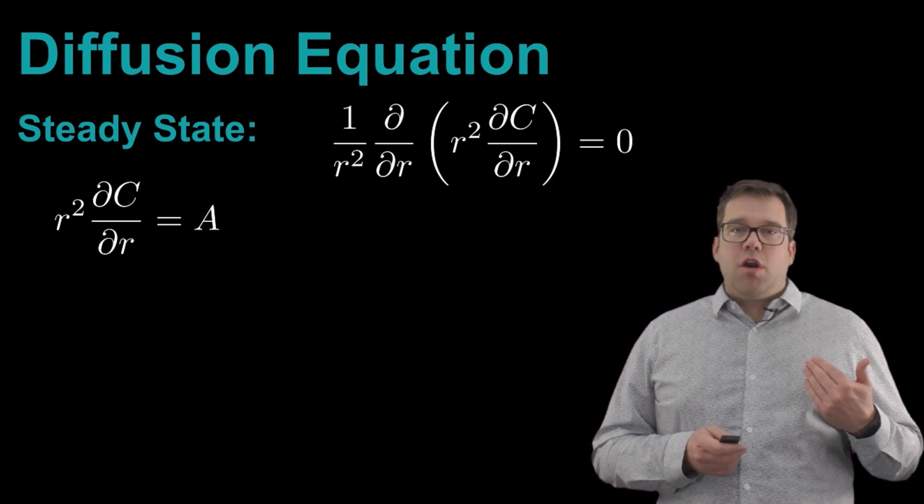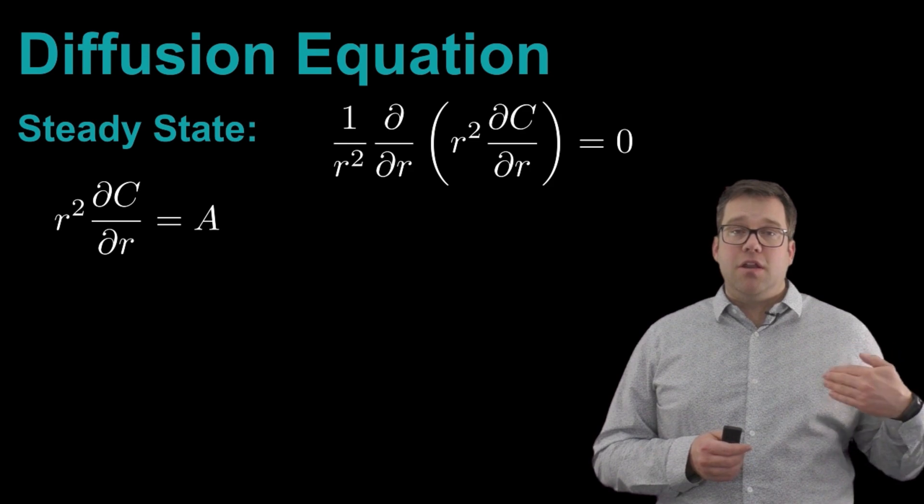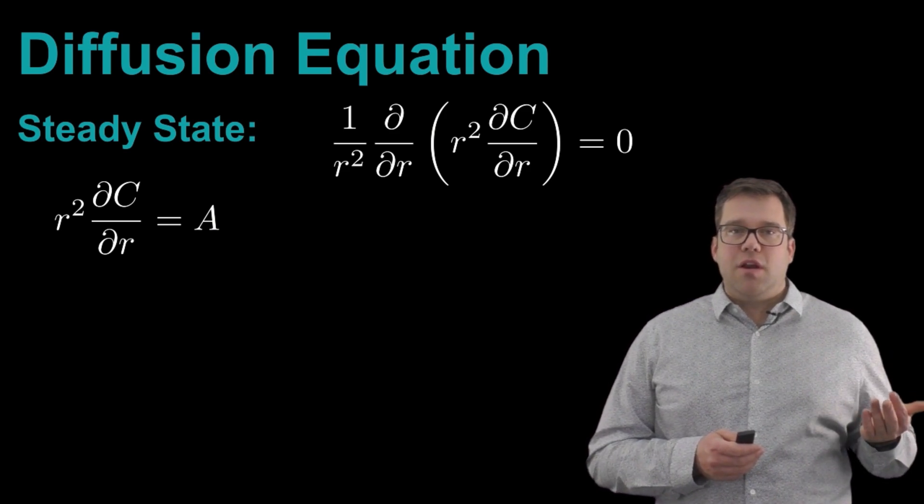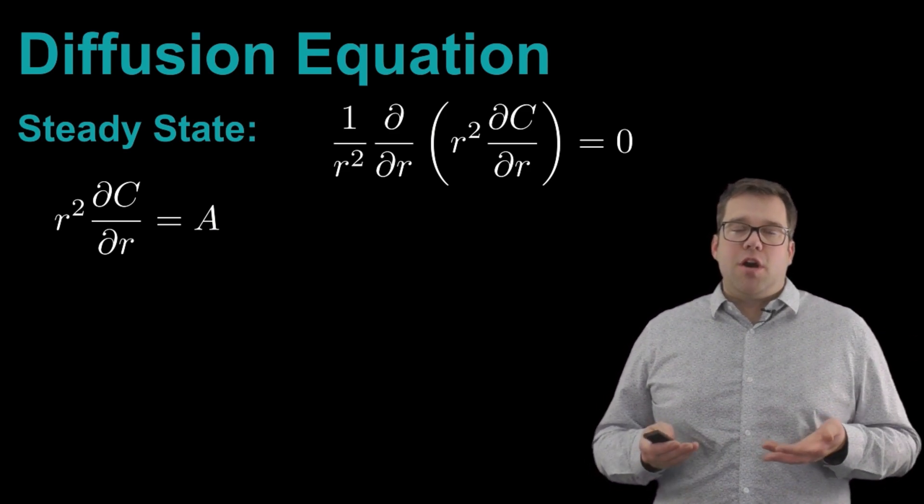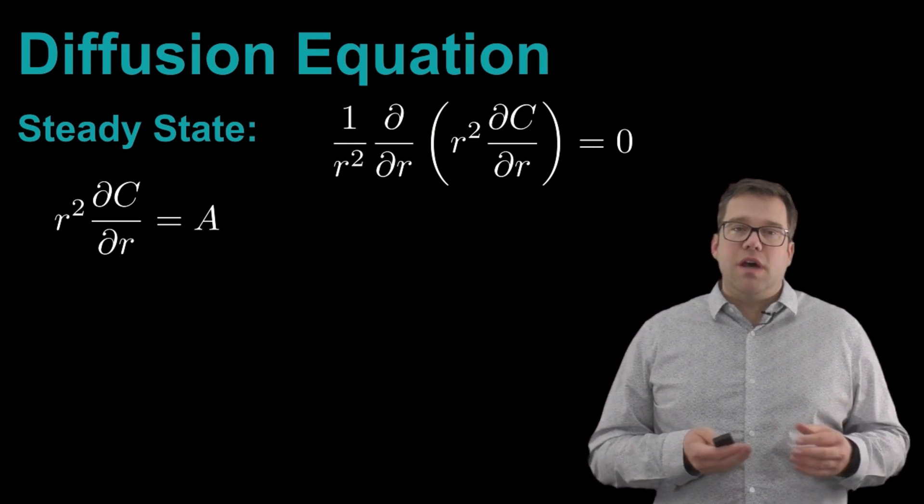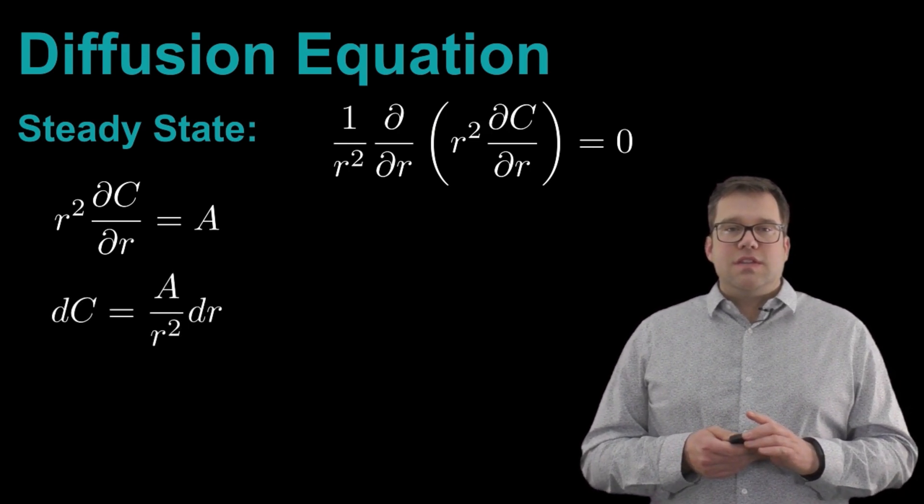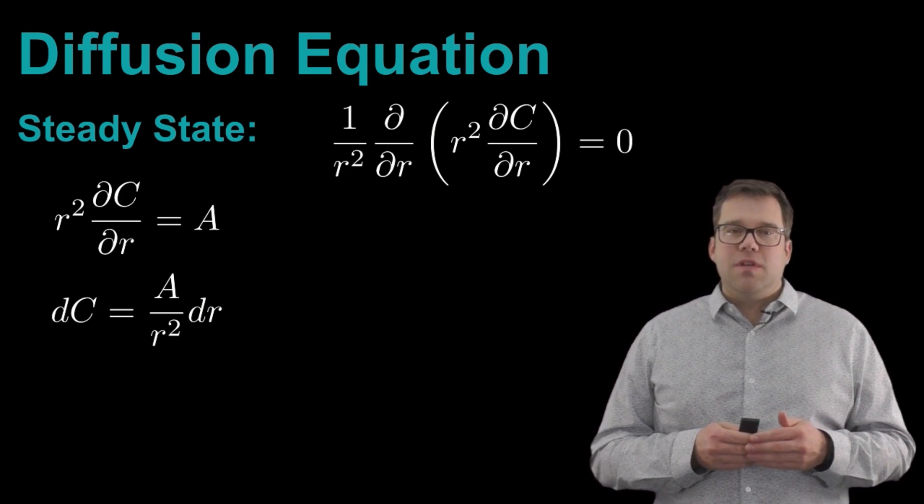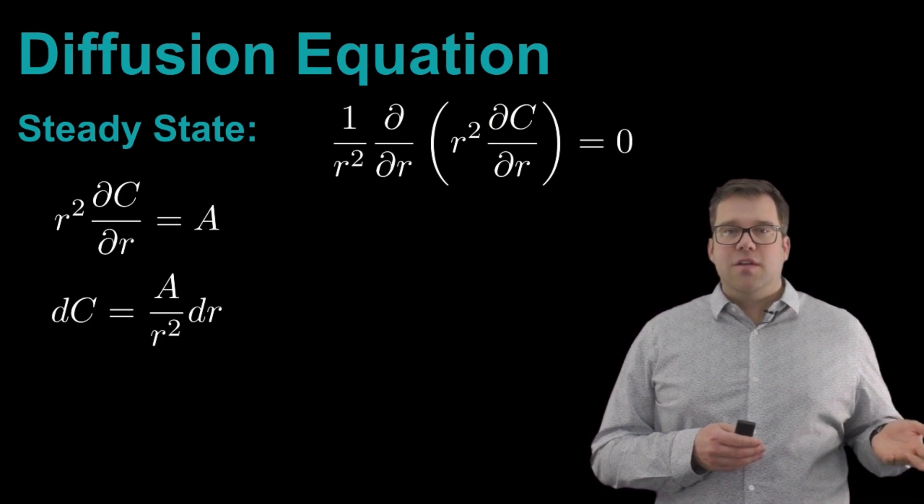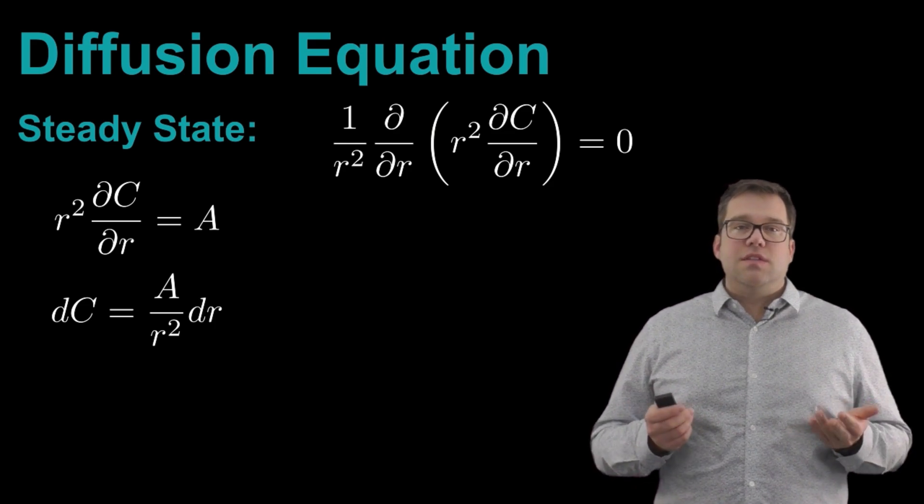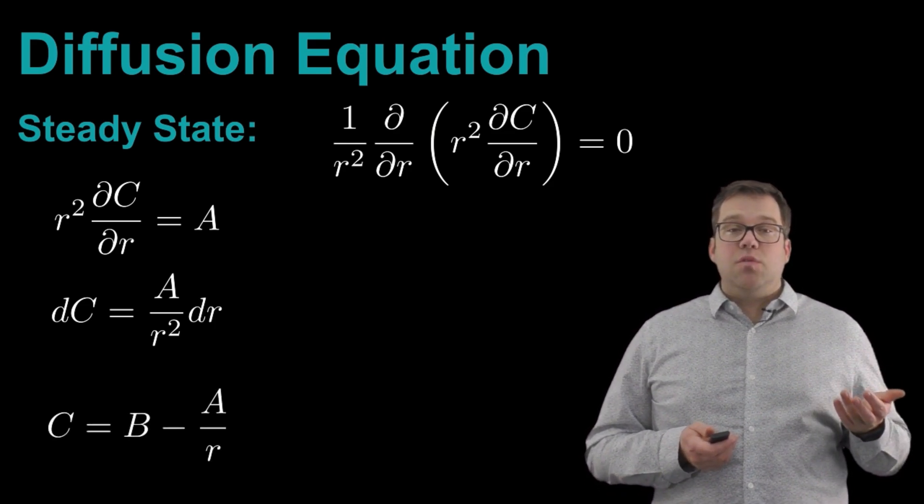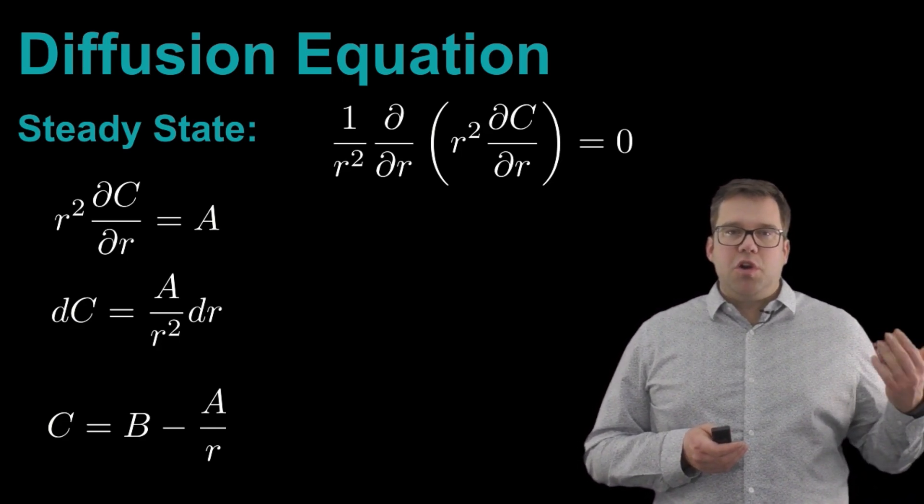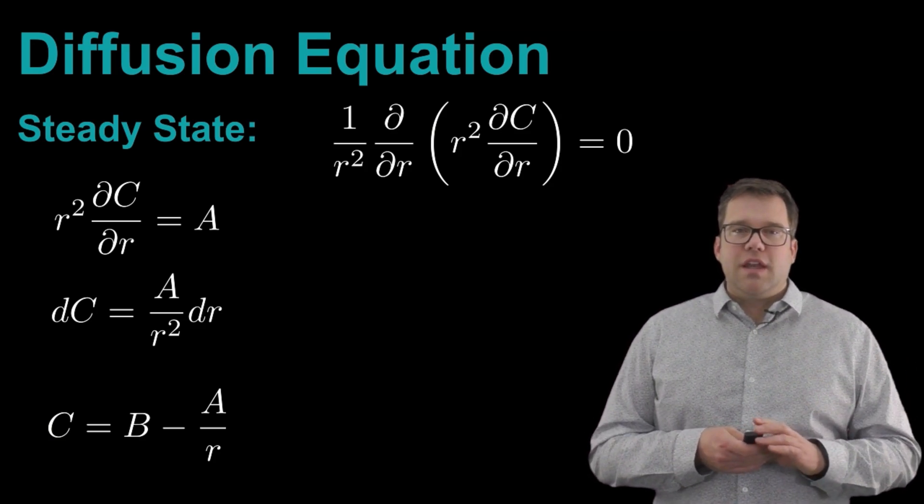So what we can do is first note that we can get rid of this one over r squared term since we can multiply both sides by it and we have zero on the right-hand side so it goes away. And then we can perform one integral. So now we're integrating over r and when we do that, we eliminate this partial derivative and we just have then that r squared times this gradient in C equals some arbitrary constant A, which we don't know the value of yet. We can now rearrange this so we can separate C from r in this equation such that we have dC equals A over r squared times dr. And now we can integrate both sides of this equation to get that C equals some other arbitrary constant B minus big A over r, where we've noted that one over r squared becomes one over r with a negative sign as we integrate.